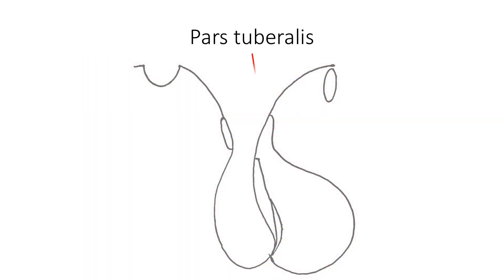The third part of the adenohypophysis is the pars tuberalis. It is a highly vascular region containing the hypothalamo-hypophysial portal system. It also contains cords of gonadotrophs and undifferentiated cells.